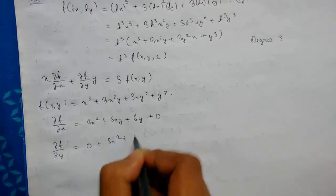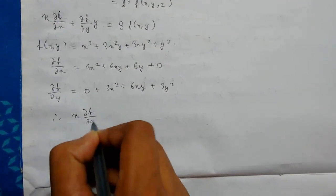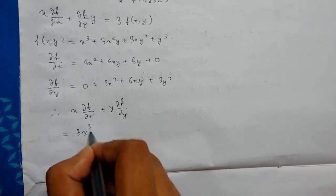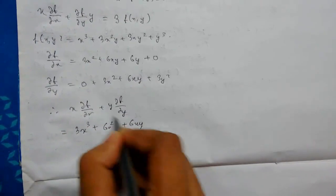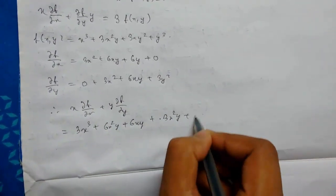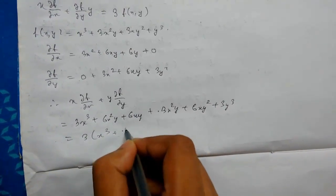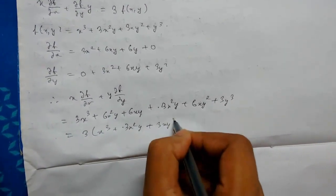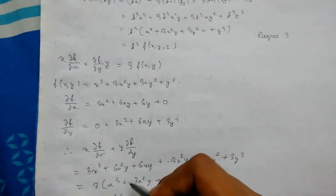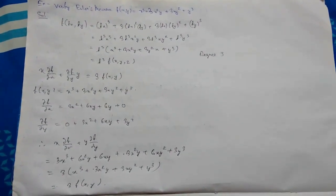Therefore the LHS, x del f del x plus y del f del y, putting the values: x times (3x squared plus 6xy plus 3y squared) plus y times (3x squared plus 6xy plus 3y squared), gives 3x cubed plus 6x squared y plus 3xy squared plus 3x squared y plus 6xy squared plus 3y cubed. Taking 3 common: 3 times (x cubed plus 3x squared y plus 3xy squared plus y cubed), which equals 3 f of x, y. So Euler's theorem is proved. If you had any problem, comment below, hit the thumbs up, and subscribe for more videos. Thank you.